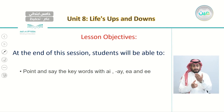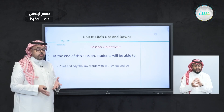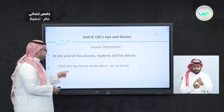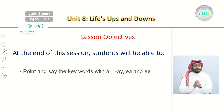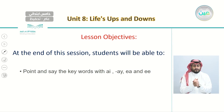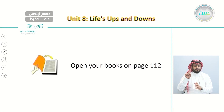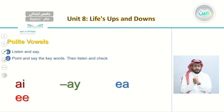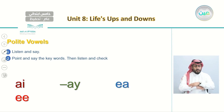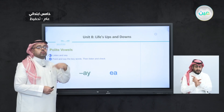Now let's get to know our objectives for today's lesson. By the end of this lesson, you will be able to point and say key words with the letters AI, AY, EA, and EE — so words that share the same letters. Please open your books to page 112. On page 112, we're going to listen to words that have what we call the polite vowels — listen to the teacher say these words and then repeat.